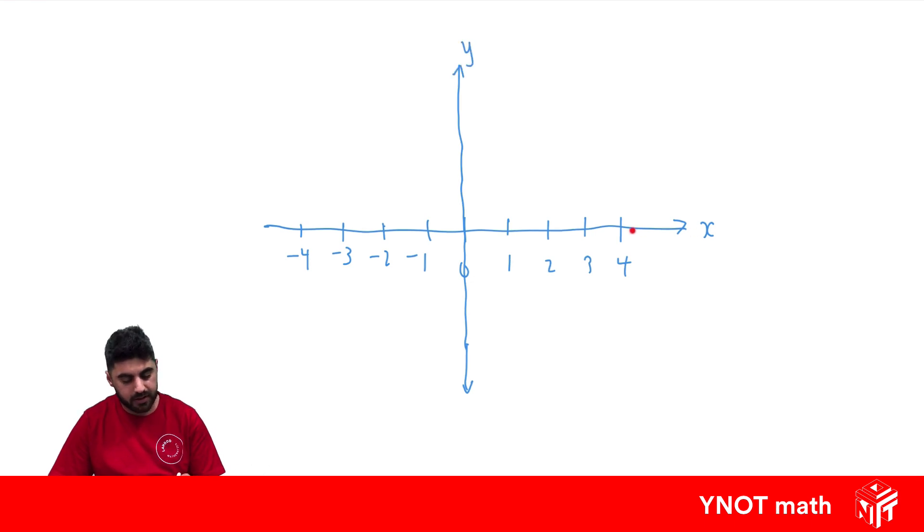Which means the one down here is our x-axis. Positive numbers go up, so we have 1, 2, 3, 4 and so on. The negative numbers go down: minus 1, minus 2, minus 3, minus 4.